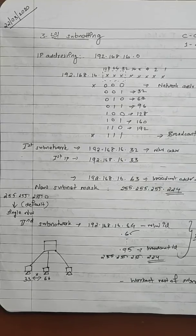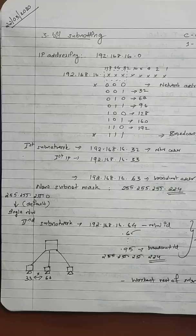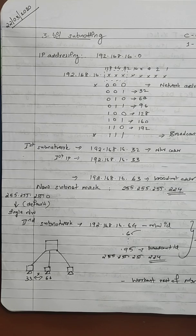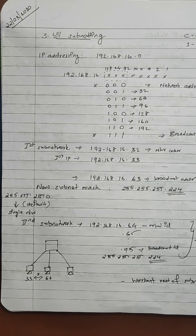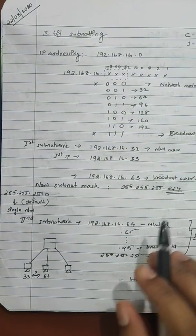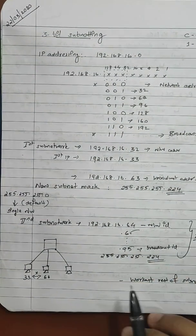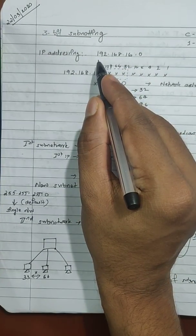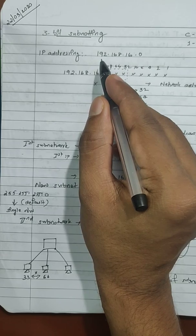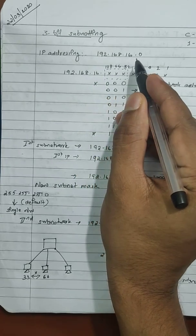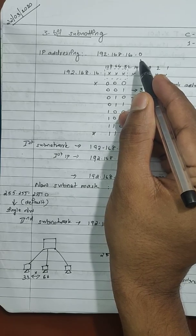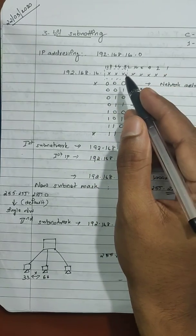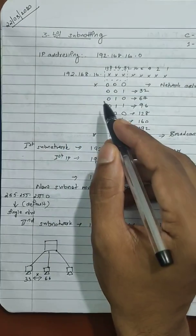Hi all, let us continue with the topic subnetting. Yesterday we talked about 2-bit subnetting technique with the example of IP address 192.168.16.0. This one is about 3-bit subnetting, the next stage of subnetting. I will consider here a class C type of addressing. As we all know, 192.168.16.0 is a class C address, and for this class C address, let us do the subnetting technique.